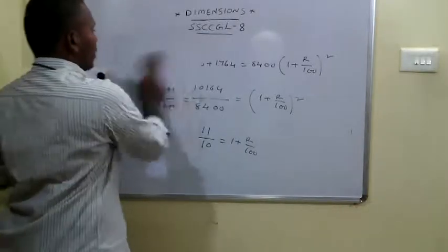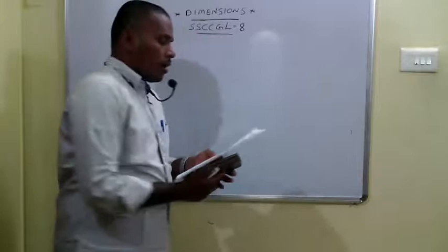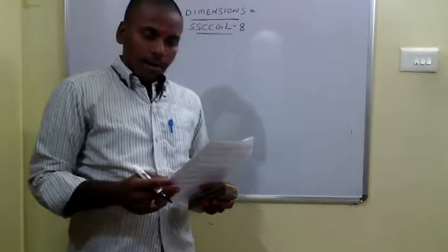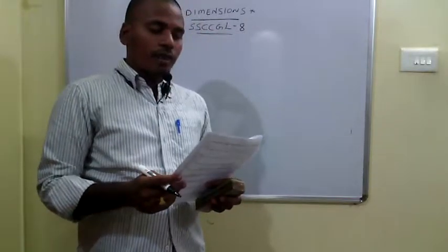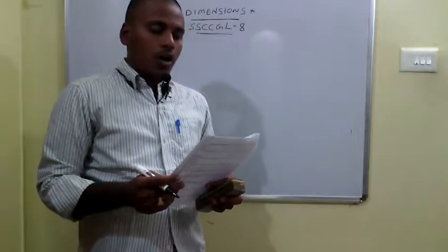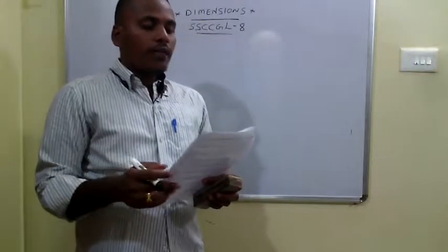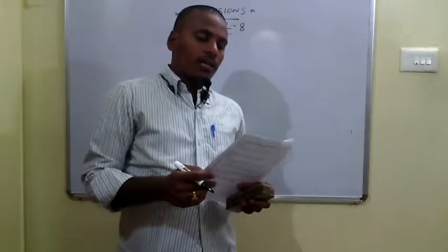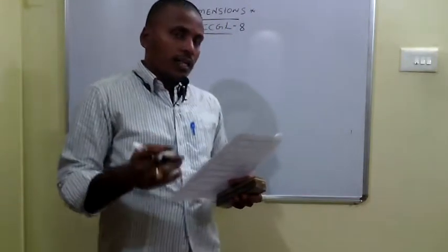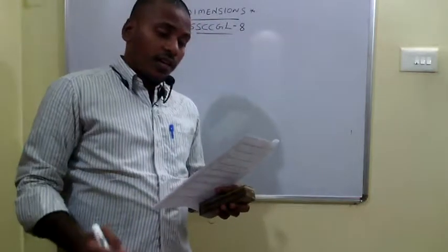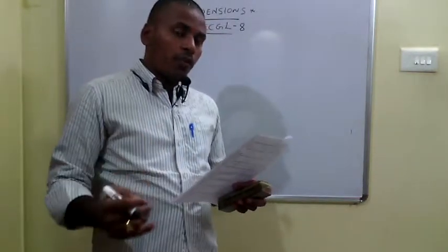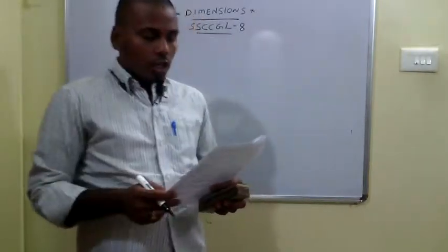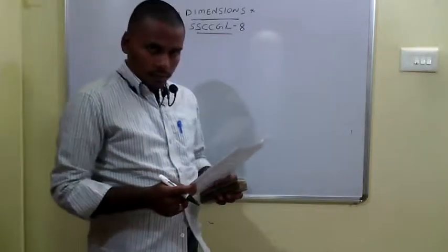The 68th problem: in a competitive examination, state A had 60% candidates selected and state B had 7% candidates selected from an equal number of appeared candidates. State B had 80 more candidates selected than A. Let the number of candidates be X; then 7% of X minus 6% of X equals 1% of X equals 80, so X equals 8000.